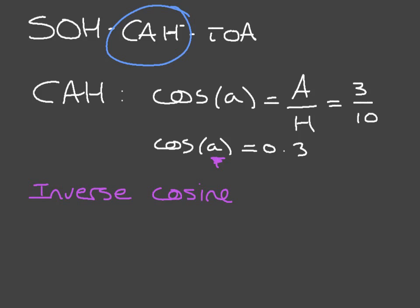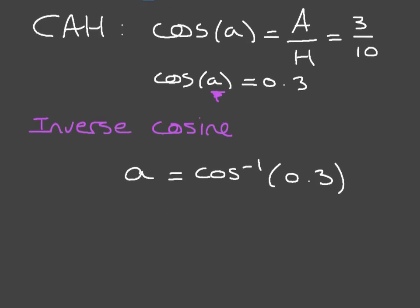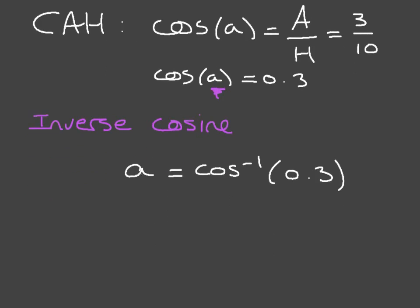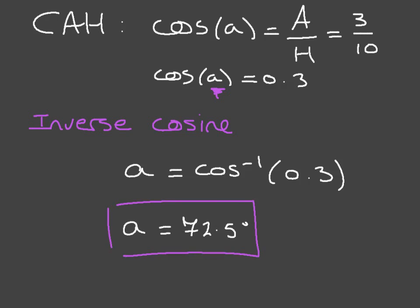Since cosine of A is equal to 0.3, A is going to be equal to the inverse cosine of 0.3. Make sure you can find that on your calculator. If you calculate inverse cos of 0.3, you'll find — rounding to one decimal place — that A is equal to 72.5 degrees. And there you go, we've just solved the problem.